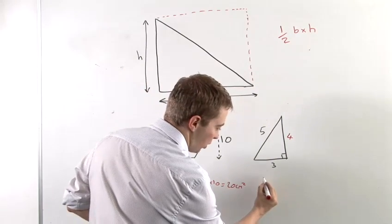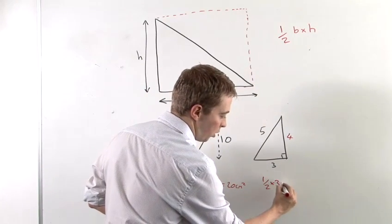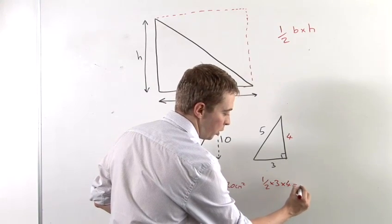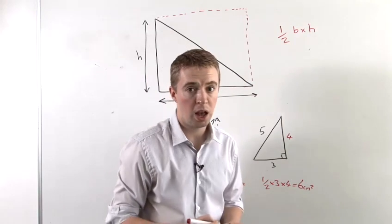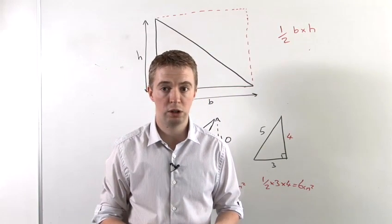So, to work out the area of this triangle, it's simply 1 half times 3 times 4, which again gives us 6 centimeters squared. And that's how to work out the area of a triangle.